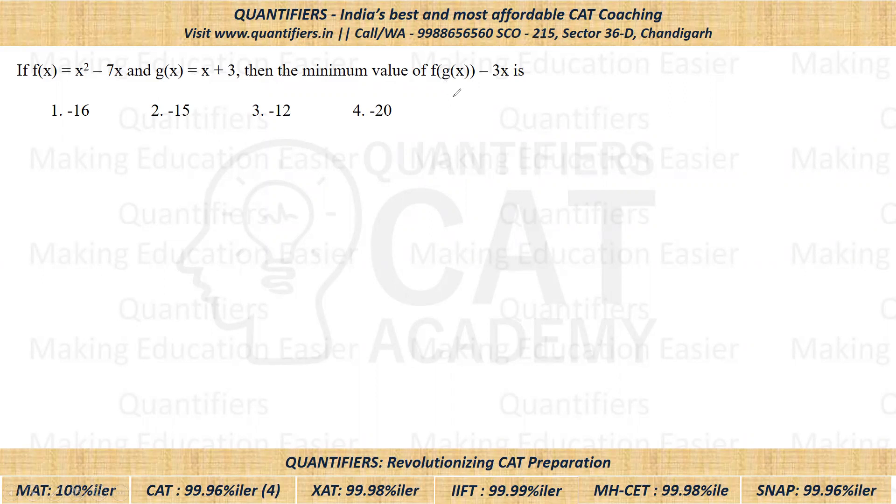So now this thing can be written as F of G of X. We know G of X is X plus 3, so that would be F of X plus 3 minus 3 times X.